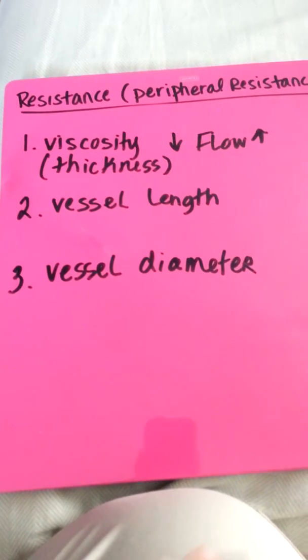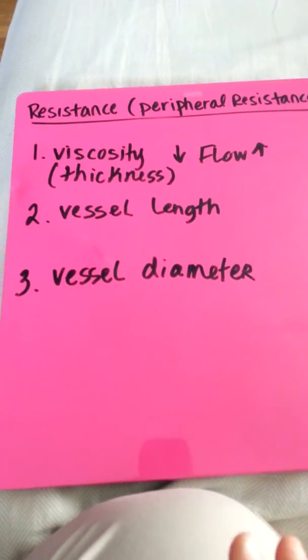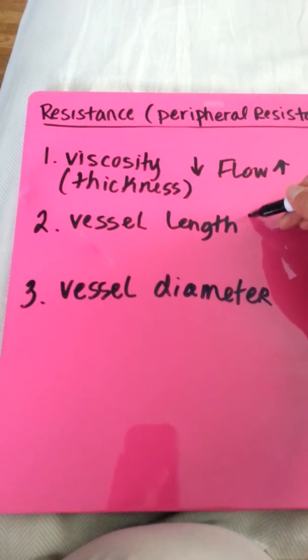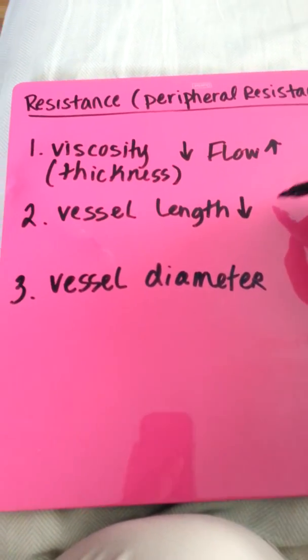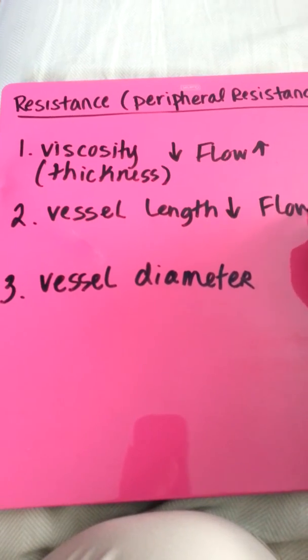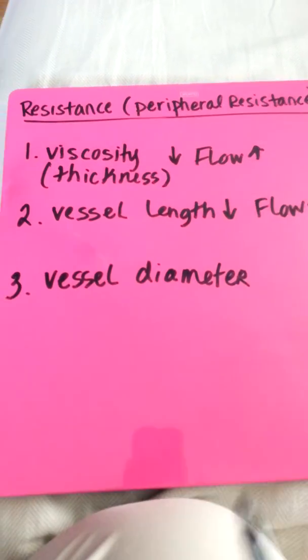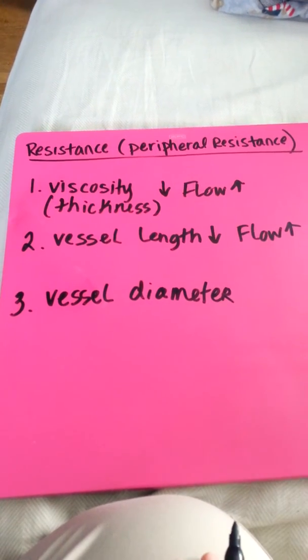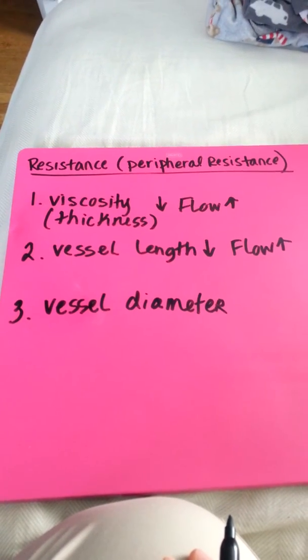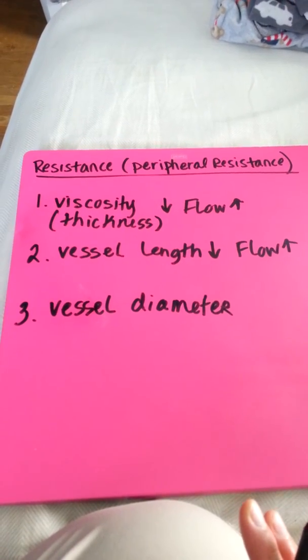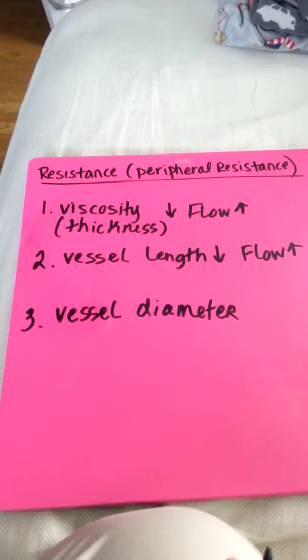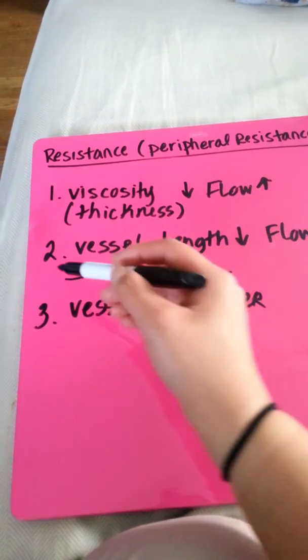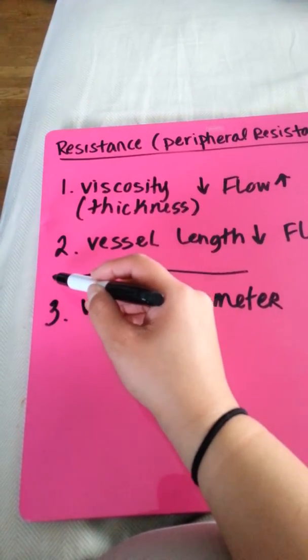Vessel length is how long the vessel is. So the shorter the vessel, blood flow increases. The longer the vessel, blood flow decreases. Just think of it as a watering hose, okay? The longer the watering hose, this is the water. So this is the start.